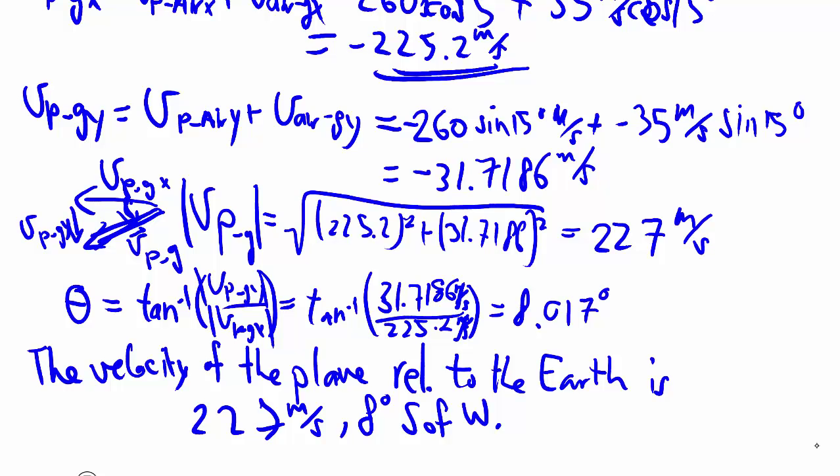For part b, they want you to kind of reason out whether or not that's expected, in the sense that since one was going east and one was going west, when you add them you expect the magnitude to decrease slightly, and it did. It went from 260 to 227. And also, because they were both heading south, you expect that the angle gets a little bigger, so it went from 5 degrees to 8 degrees. Seems to make sense, just a quick sanity check.